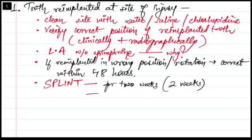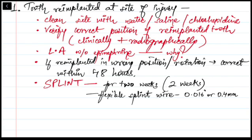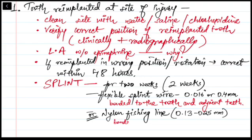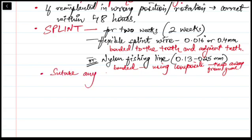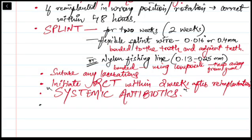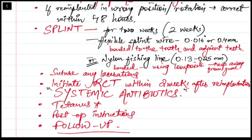For splinting, stabilize the tooth for two weeks using a passive flexible splint — a wire of diameter up to 0.016 inches or 0.4 mm bonded to the tooth — or a nylon fishing line of 0.13 to 0.25 mm bonded with composite. Note that nylon splints are not recommended for children when only a few permanent teeth are present. Next, suture any gingival lacerations, initiate root canal treatment within two weeks, administer systemic antibiotics, and check tetanus status. Provide post-operative instructions and schedule regular follow-ups.